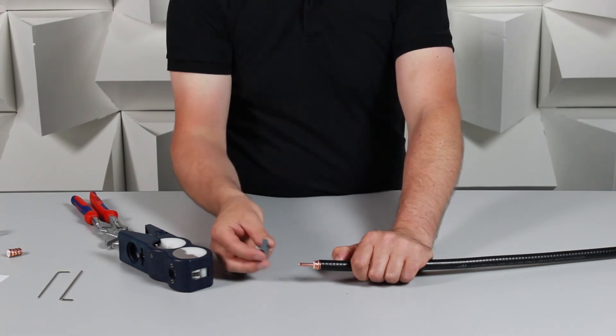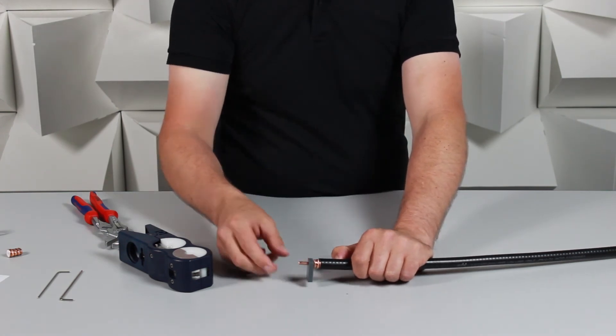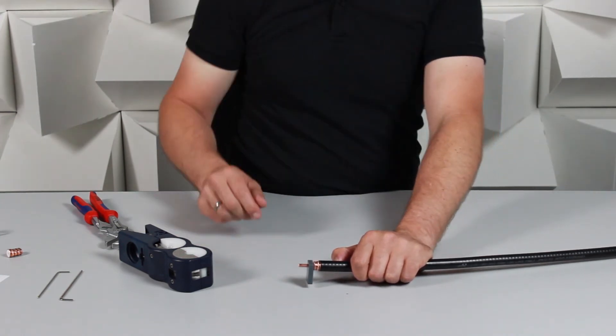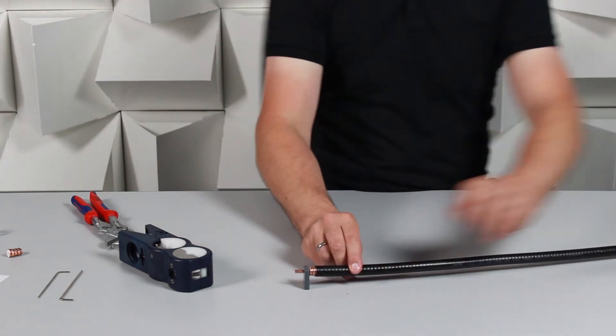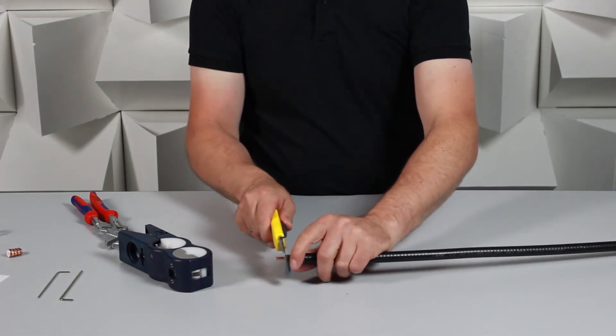We also offer a gauge to ensure that the center conductor can be marked at the correct length. Just slide it into place and use a knife to mark the correct position. Then cut as normal.